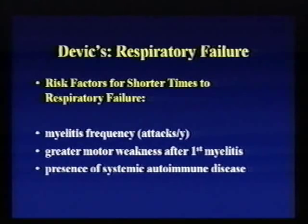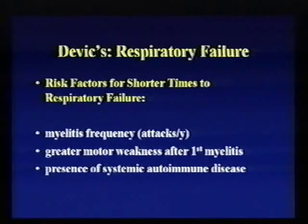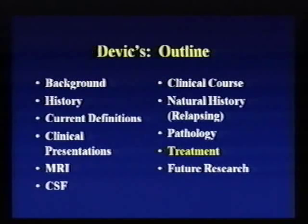We also recently looked at factors that can predict the risk of respiratory failure. Not surprisingly, the number of times a person has an episode of myelitis increases their risk of reaching respiratory failure more quickly, as does having more weakness after the first event of transverse myelitis and the presence of one of those autoimmune diseases.